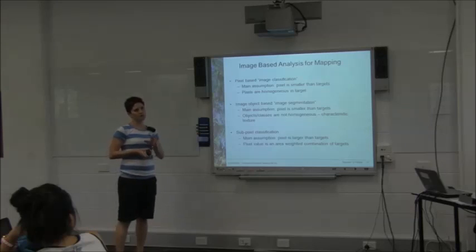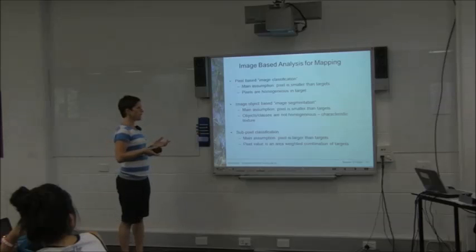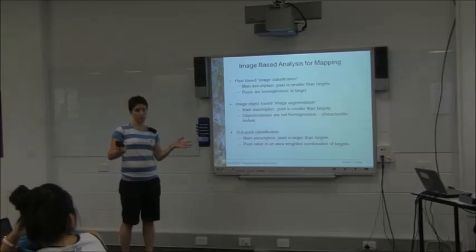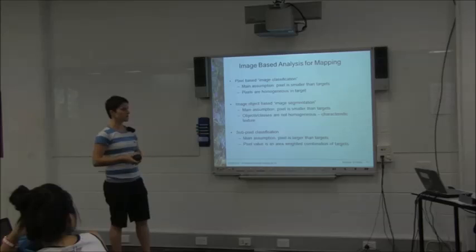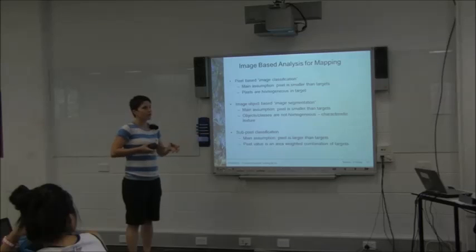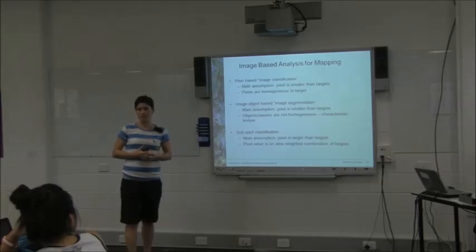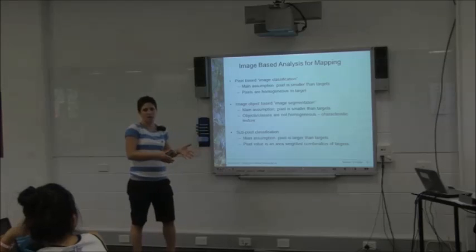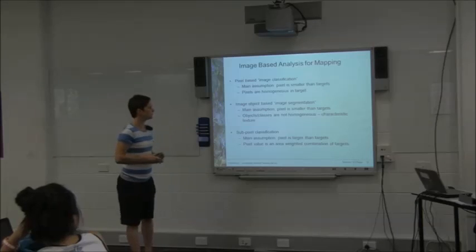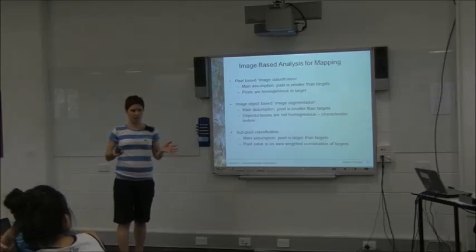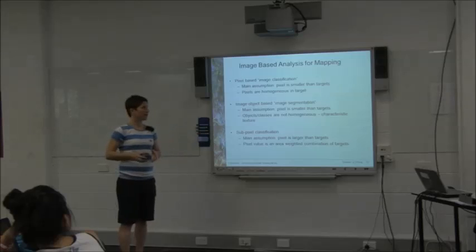The other type of classification is sub-pixel classification. This is where we acknowledge that the pixel on the ground is larger than the feature of interest. For example, with Landsat's 30 by 30 metre pixel, we might ask: can we work out how many trees are in that pixel? To do that, we break down the spectral signatures from that pixel and figure out what its components are — for instance, 50% vegetation and 50% water. Each classification type has its place, and none is generically better than the others; it depends on the application.